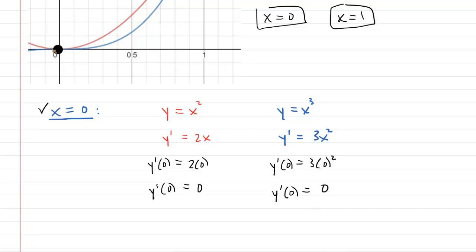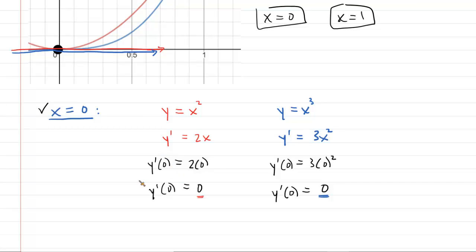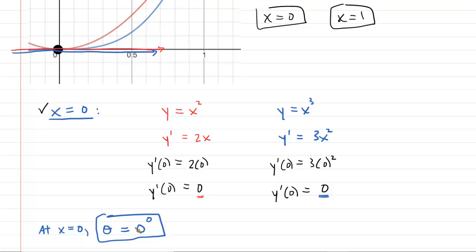To visualize this, at the point of intersection where x equals zero, the slope is zero, so the tangent line is horizontal for the red curve. Similarly, the tangent line for the blue curve also has a slope of zero and is perfectly horizontal. The angle between two horizontal lines projecting in the same direction is zero degrees. So at x equals zero, the angle between the tangent lines is simply zero degrees.